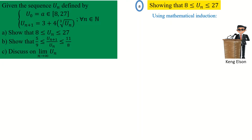The other way is the direct proof, where you actually prove directly that u_n lies between 8 and 27, but it is far more technical — you need to master a lot of functions. Students preparing for Polytechnic Douala or Polytechnic Maroua will need those concepts, but I'll cover that method in another video.